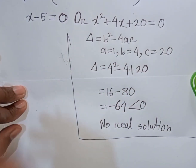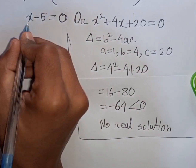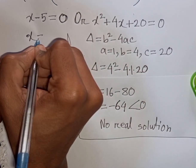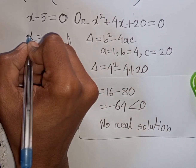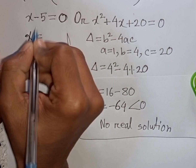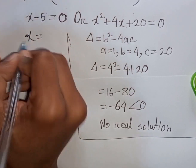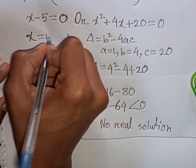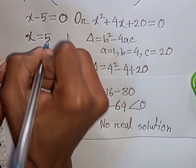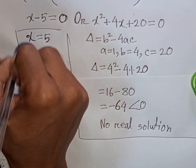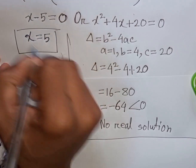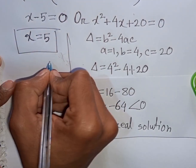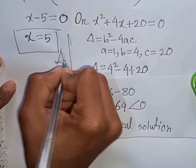From (x - 5) = 0, taking -5 to the right side gives x = 5. So x = 5 is the value of x. This is our final answer.